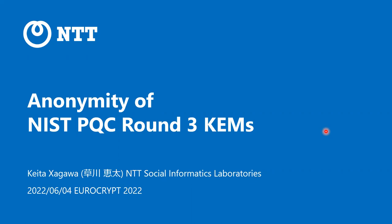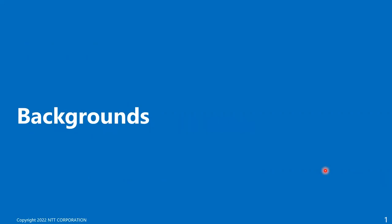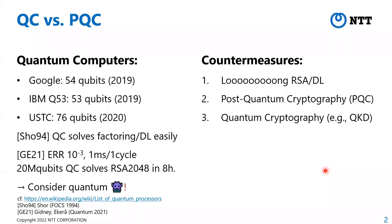Following Maram's talk, let me first discuss the background. Several companies and organizations have been developing quantum computers — for example, Google, IBM, UCSD, and others have constructed approximately 100 physical qubit quantum machines. Google plans to develop a one-million physical qubit machine by 2030, and IBM plans to develop a large physical qubit machine by 2025. We also know that Shor's algorithm solves the factoring problem and the discrete logarithm problem in polynomial time on quantum machines.